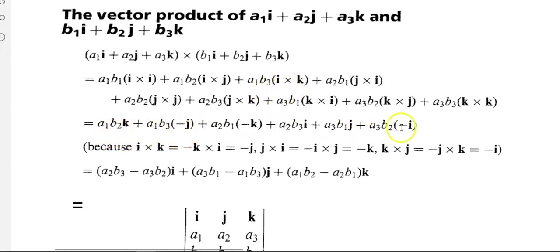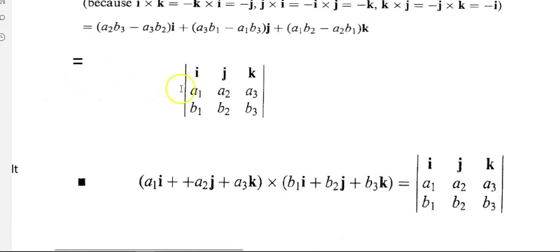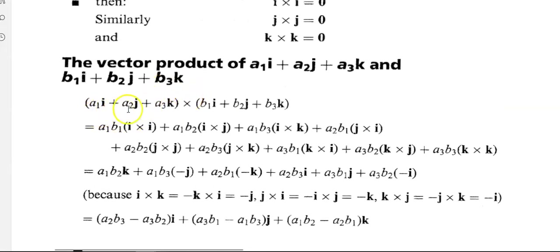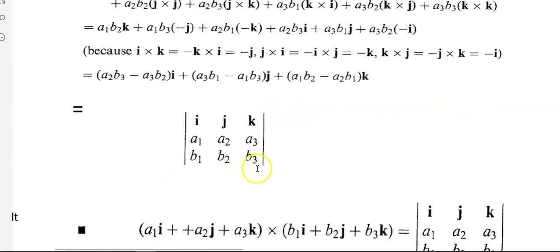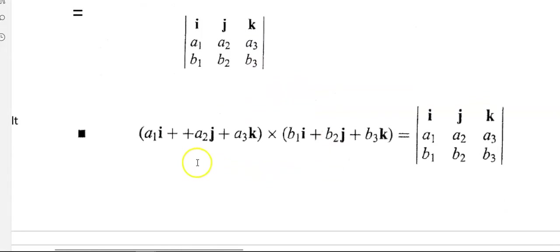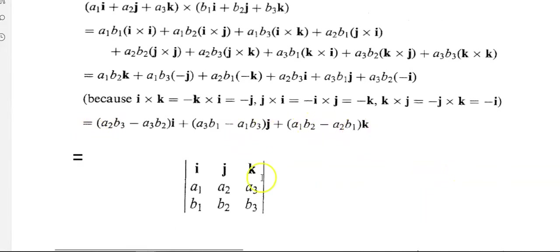You can see what the final line looks like, and you really do not want to have to do all of this out — it would be horrendous. Thankfully, this works out to be the same as the determinant of a 3×3 matrix: put i, j, k in the first row; coefficients a1, a2, a3 in the second row; and coefficients b1, b2, b3 in the third row. If you work that out, you get the required result.